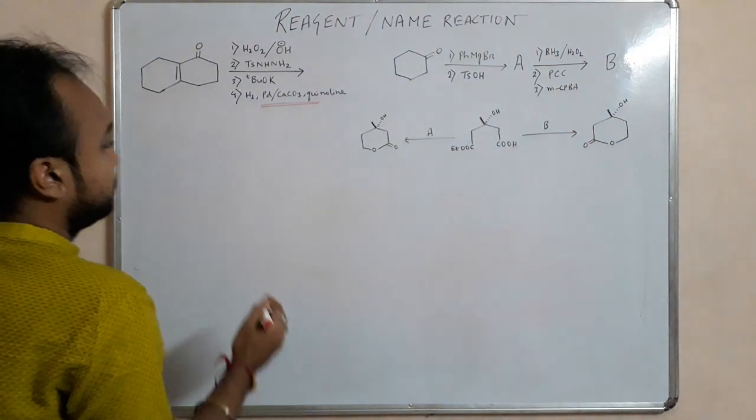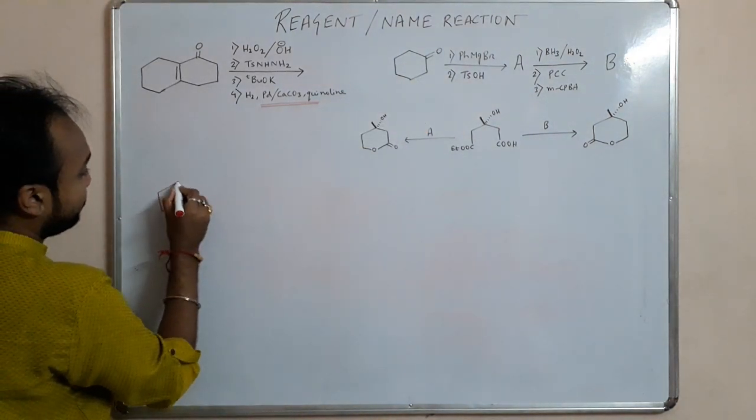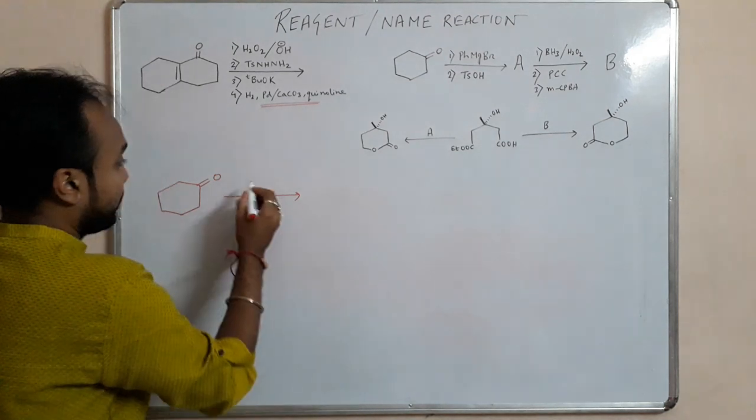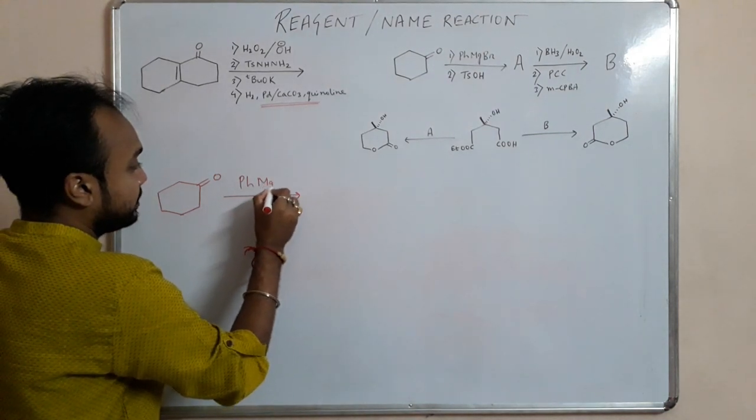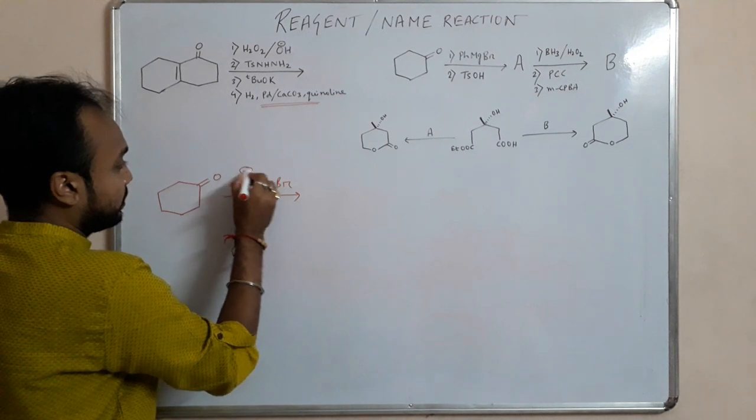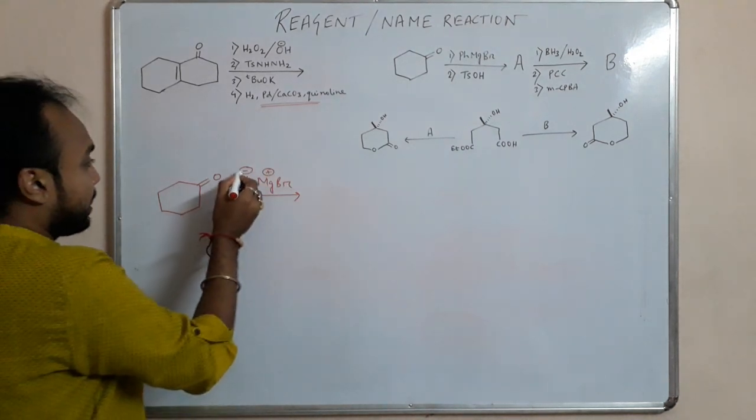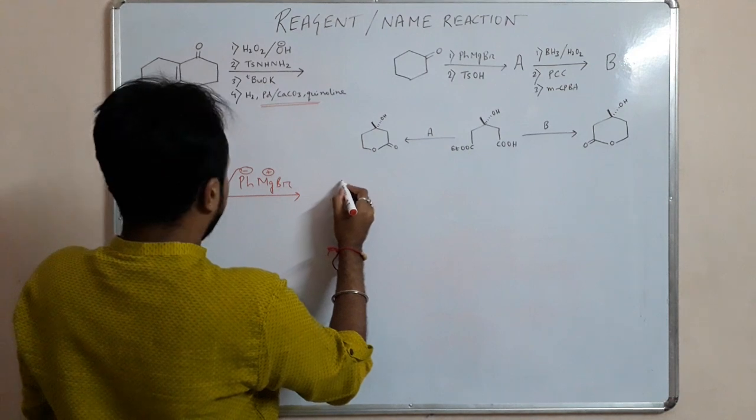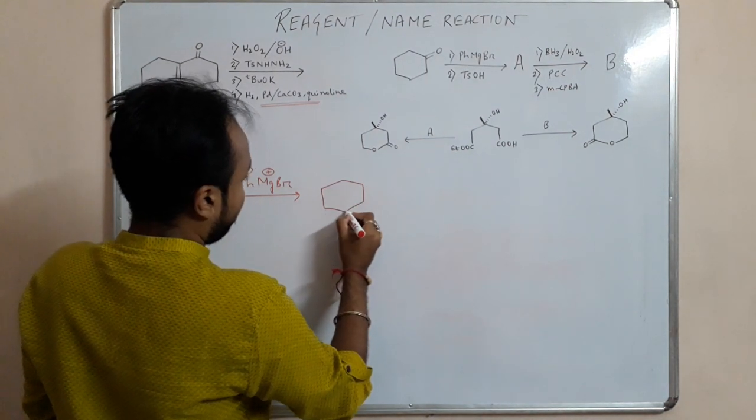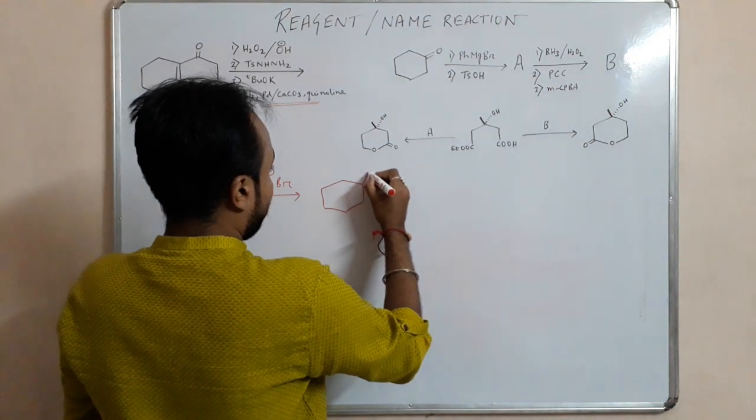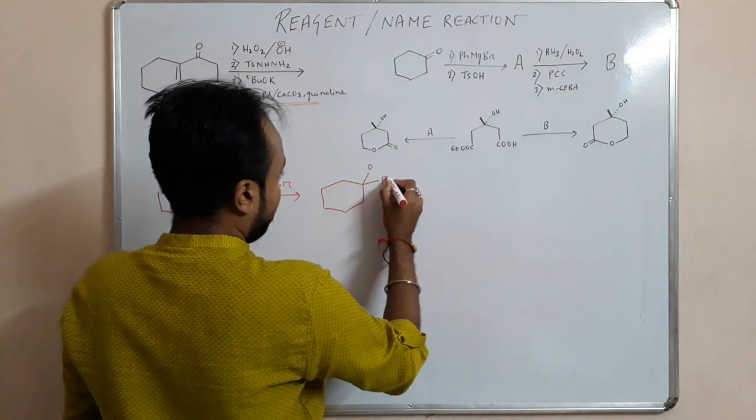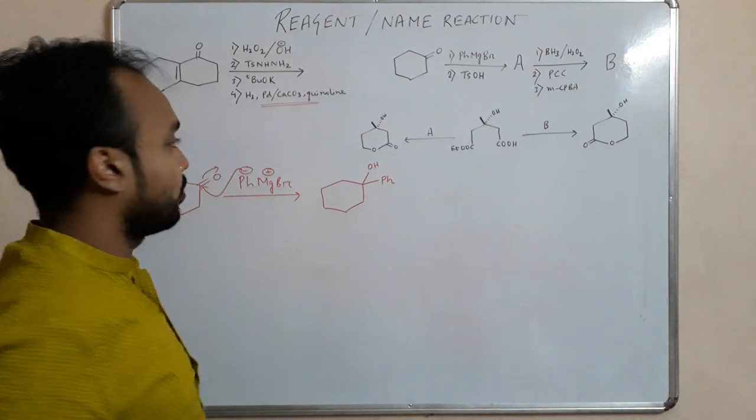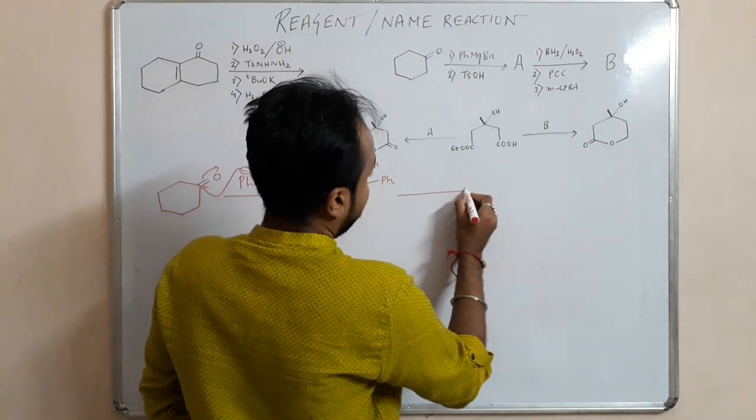So this one, we have given a cyclohexanone and the first step we have given Grignard reagent, so phenyl MgBr. So this is like this, so it will attack the carbonyl carbon and it will form.